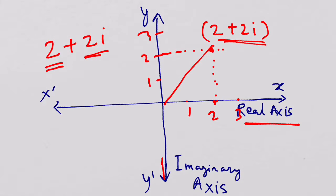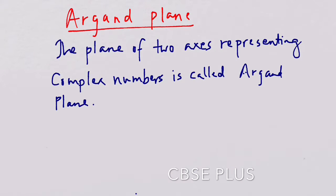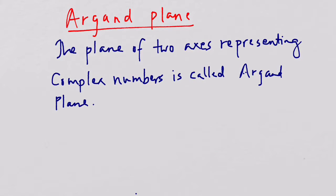This looks like a simple Cartesian coordinate plane used in coordinate geometry. The difference is that here we start from a one-dimensional real line and add a new dimension to get this plane. The y-axis now serves the purpose of representing the imaginary part of complex numbers.